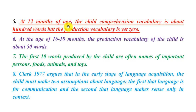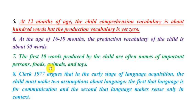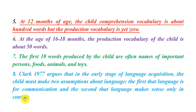At the age of 12 months, the child's comprehension vocabulary is about 100 words, but the production vocabulary is yet zero. At 16 to 18 months, the production vocabulary of the child is about 50 words. The first ten words produced by the child are often names of important persons, foods, animals, and toys. Clark (1977) argues that in the early stage of language acquisition, the child must make two assumptions: first, that language is for communication, and second, that language makes sense only in context.